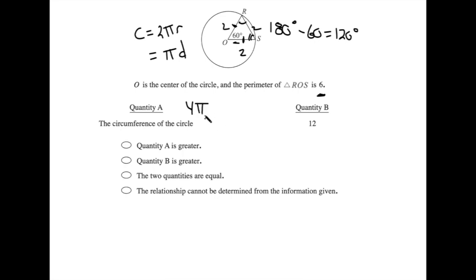Which, if you round pi to 3.14 and do that multiplication, is just so slightly greater than quantity B. So quantity A is our correct answer here.